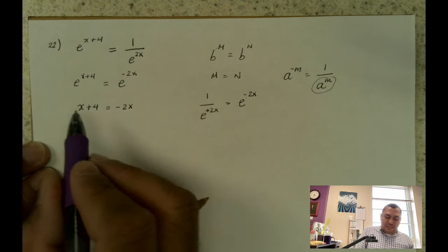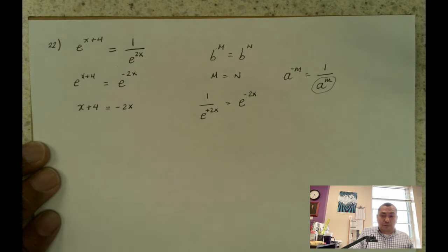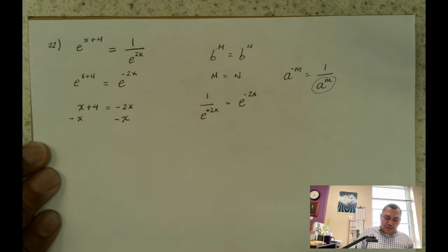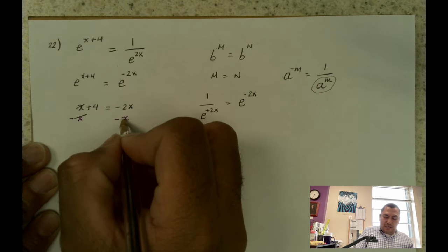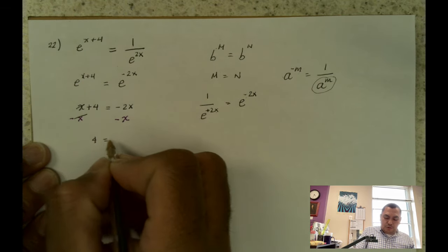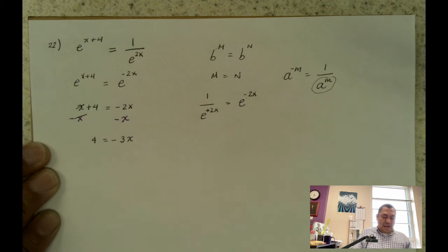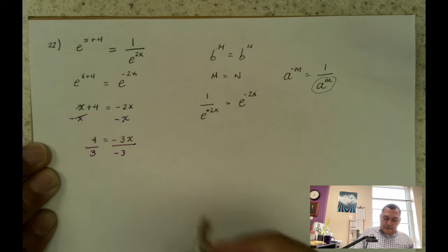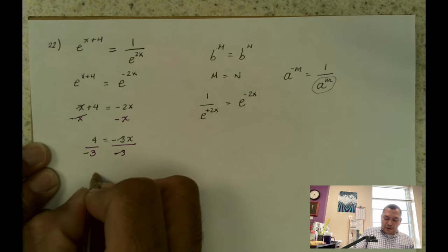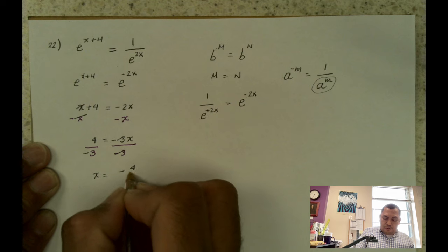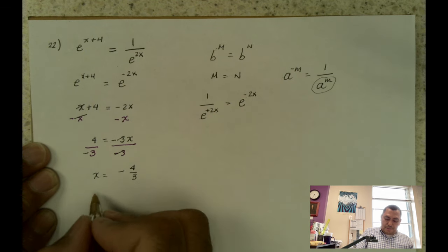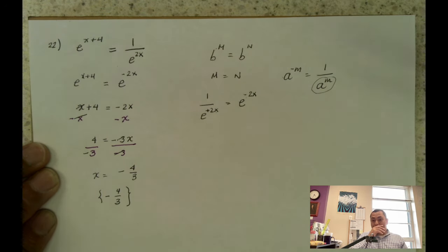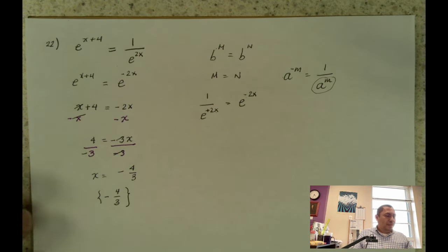To avoid confusion, I'm going to move the x terms together by subtracting x from both sides. These cancel and negative 2x minus x equals negative 3x. Then we divide both sides by negative 3, and we get x equals negative 4 over 3. That will be my solution to the problem.